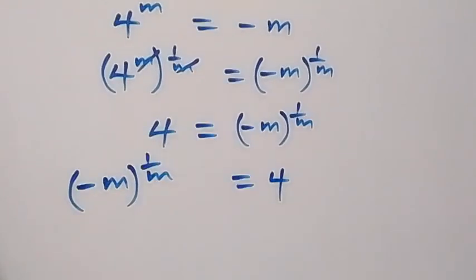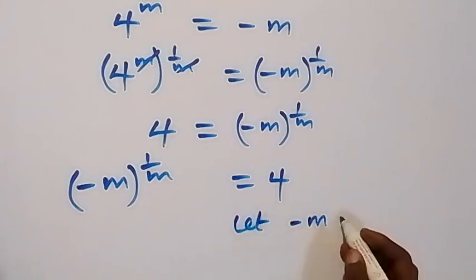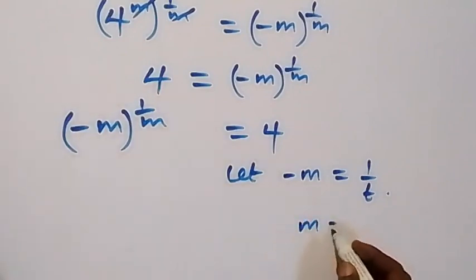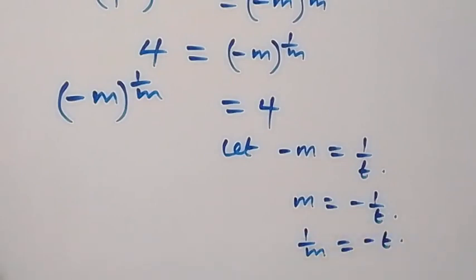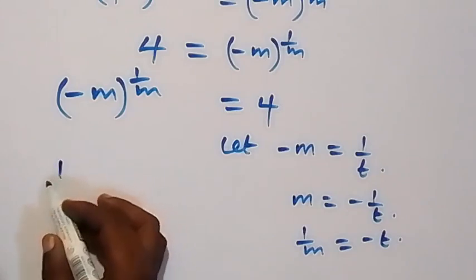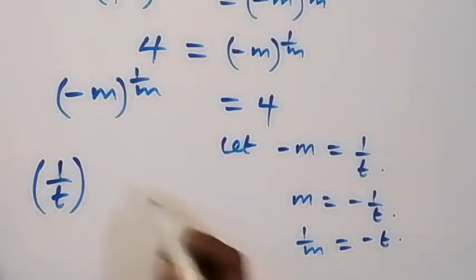From here, we can represent minus m raised to power 1 over m by 4. So we can say that minus m equals to 1 over t, and from here m will now equal to minus 1 over t. Also, 1 over m will be written as minus t from here.